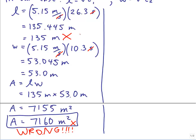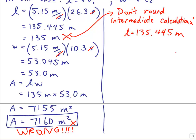It turns out the mistake was rounding early. The rule is don't round intermediate calculations. The proper length really was 135.445 meters, and the proper width really was 53.045 meters. So you have to keep all those numbers, or at least keep at least five significant figures.